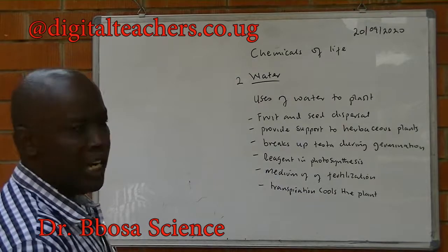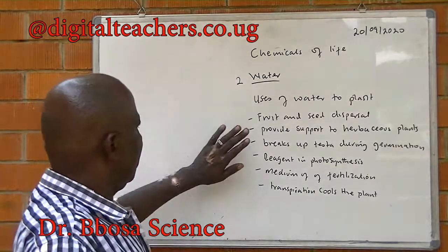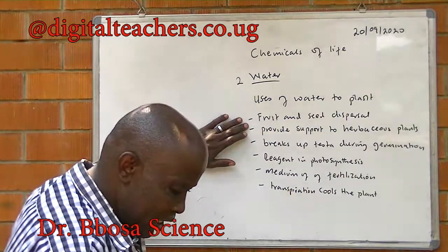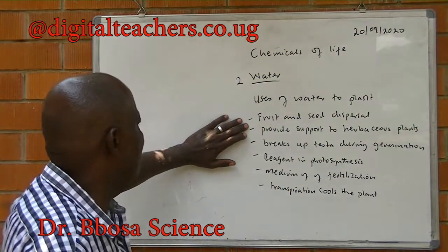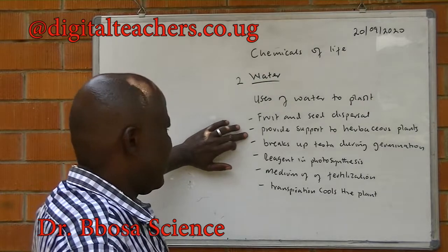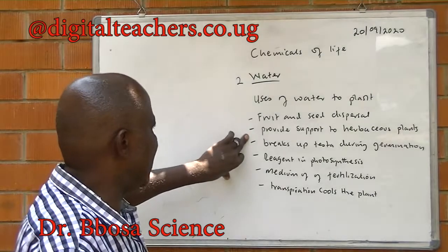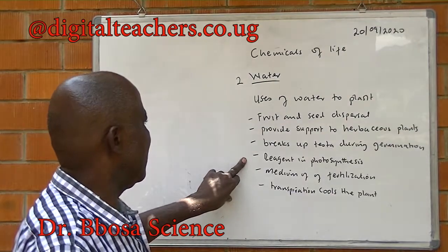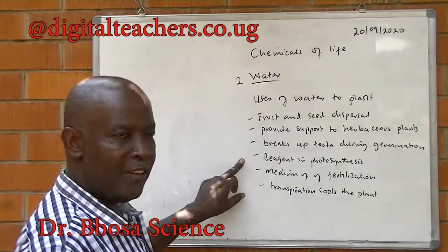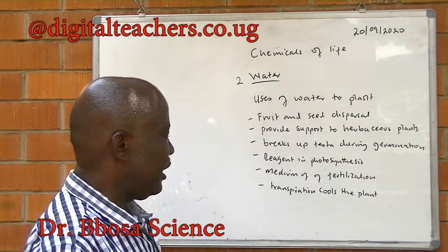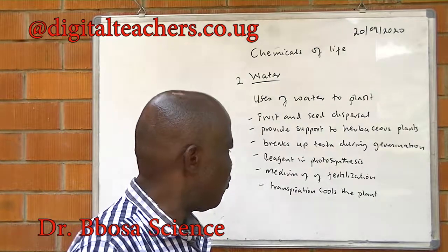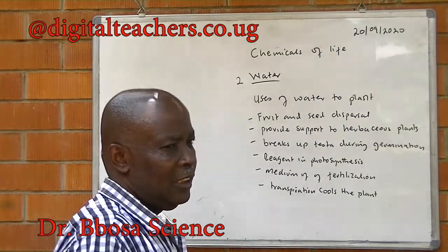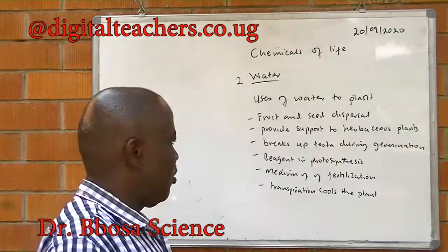Uses of water to the plant: it helps in fruit and seed dispersal, spreading seeds and fruits. It provides support to herbaceous plants. It provides raw material during germination. It is a reagent for photosynthesis. It is a medium of fertilization, especially to lower plants such as Pteridophyta and Bryophyta.